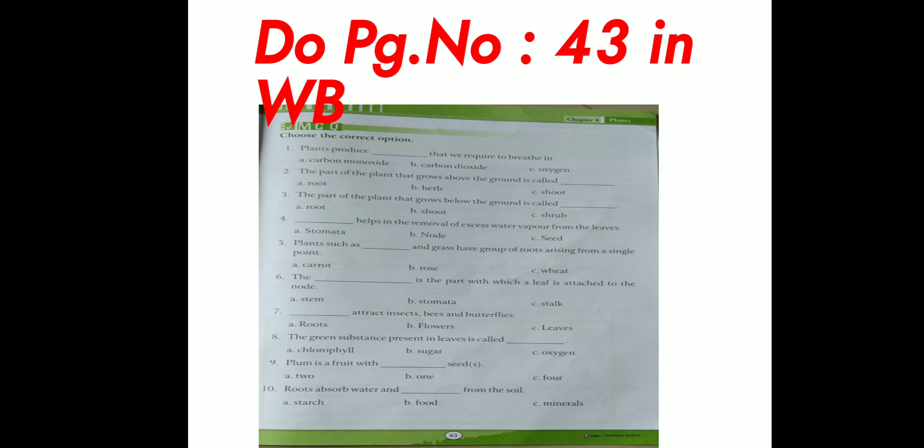Tenth one. Roots absorb water and dash from the soil. A is starch. B is food. C is minerals.